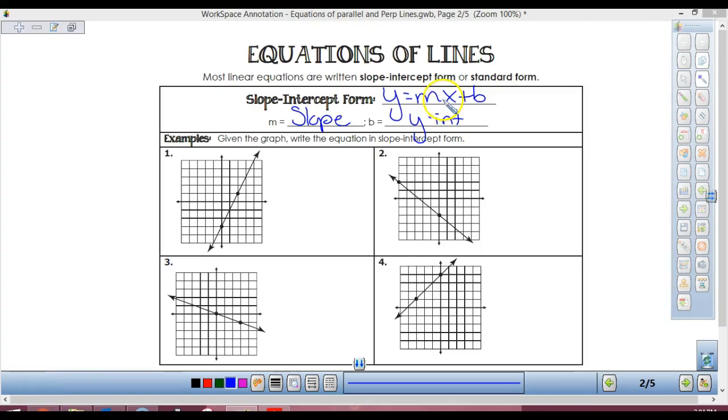Alright, slope-intercept form. Y equals mx plus b. M is slope, B is y-intercept.